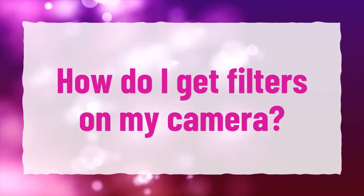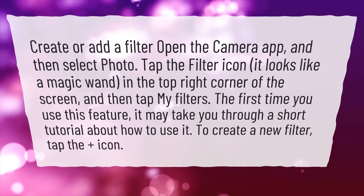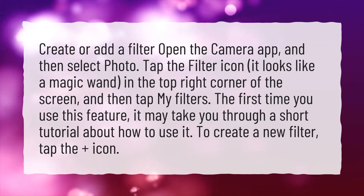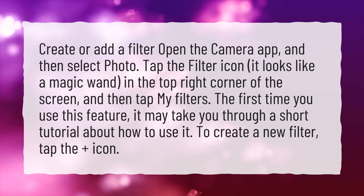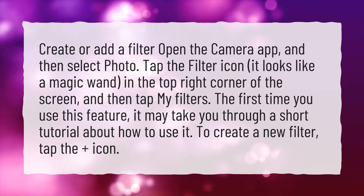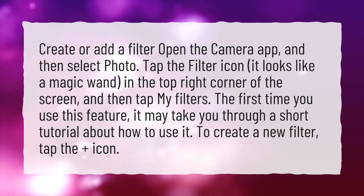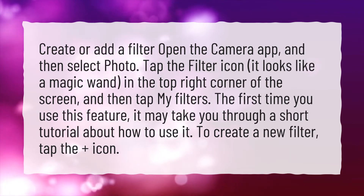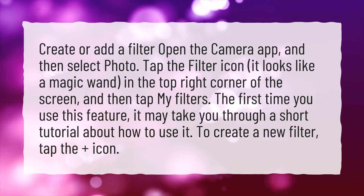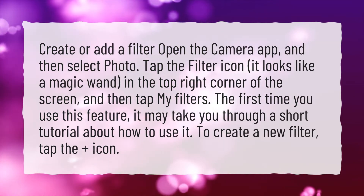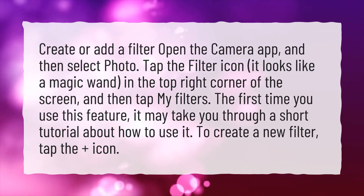How do I get filters on my camera? To create or add a filter, open the camera app and then select photo. Tap the filter icon — it looks like a magic wand — in the top right corner of the screen, and then tap My Filters. The first time you use this feature, it may take you through a short tutorial about how to use it. To create a new filter, tap the plus icon.